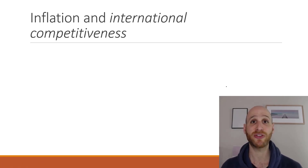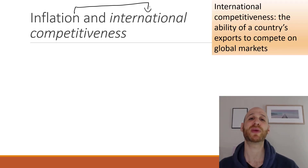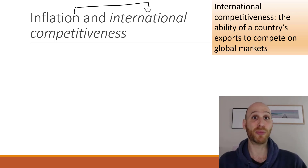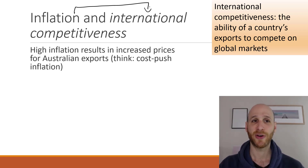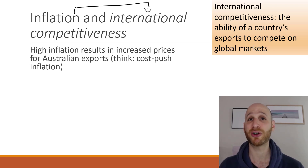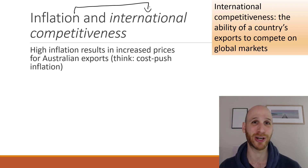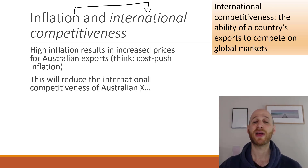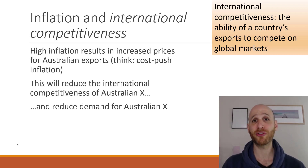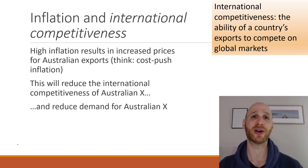Let's now look at inflation and its impact on international competitiveness. International competitiveness is essentially the success of a country's exports on world markets — the cheaper exports are, the more successful they'll be. The idea is that high inflation will result in cost-push inflation, which will increase production costs and make everything produced in Australia more expensive, including exports. This will make Australia's exports less competitive and less successful on overseas markets, reducing international competitiveness and export sales.